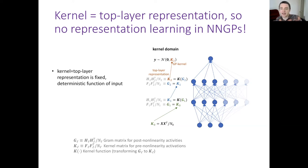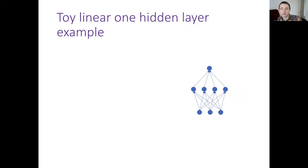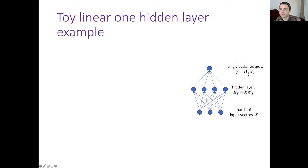In a deep neural network, the whole point is to learn a good top-layer representation. For a toy one-hidden-layer network with a linear hidden layer, we compute the top-layer kernel as the outer product of h's. Substituting the equations into each other, we get a form where the product of weights acts as kernel hyperparameters.